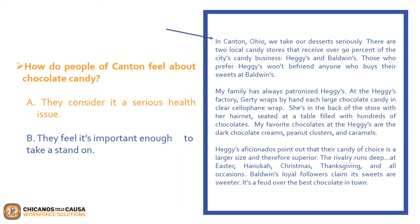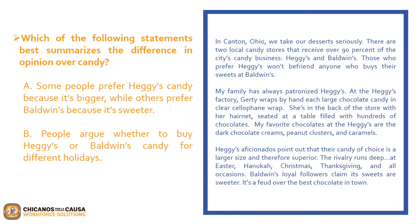Now let's move on to the second question. Which of the following statements best summarizes the difference in opinion over candy? Is it A, some people prefer Heggie's candy because it's bigger, while others prefer Baldwin's because it's sweeter? Or B, people argue whether to buy Heggie's or Baldwin's candy for different holidays? The correct answer is A, some people prefer Heggie's candy because it's bigger, while others prefer Baldwin's because it's sweeter. You can find evidence of this in the first sentence of the last paragraph.